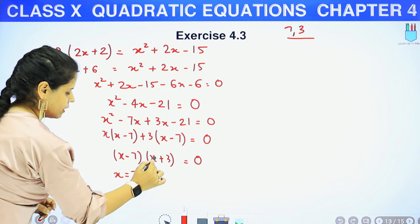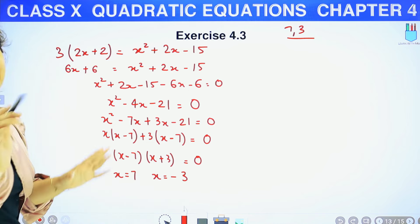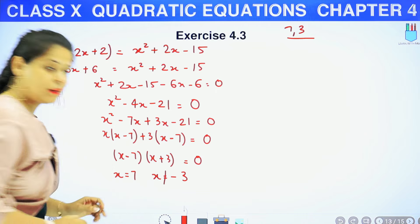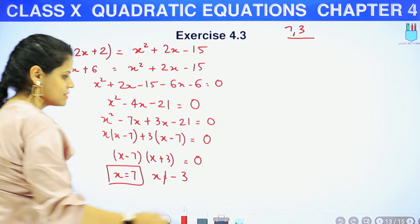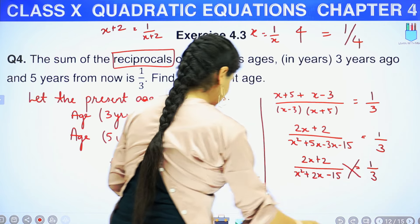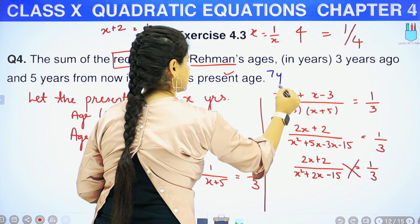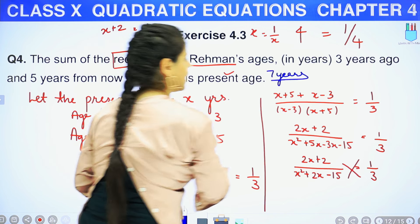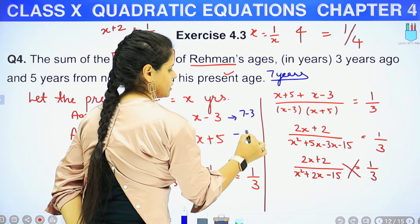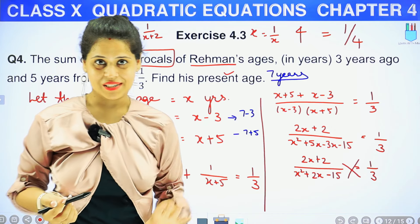यहाँ से X = 7 और यहाँ से X = minus 3. अब देखो — X हमने present age let किया था, तो वो negative नहीं हो सकती. So X cannot be minus 3. Therefore X = 7. X की value आ गई 7, मतलब present age = 7 years. यहाँ पर लिख देते हैं: present age is 7 years. सिर्फ यही निकालनी थी और वो 7 years है.